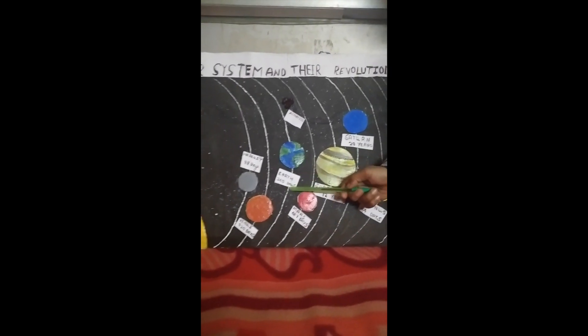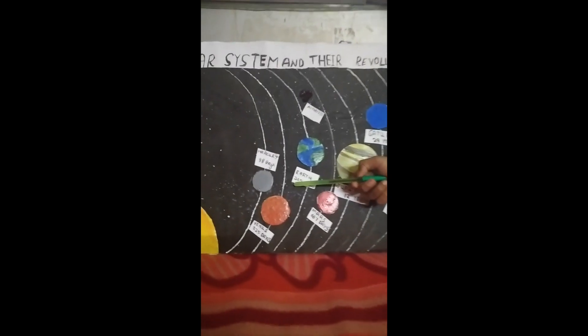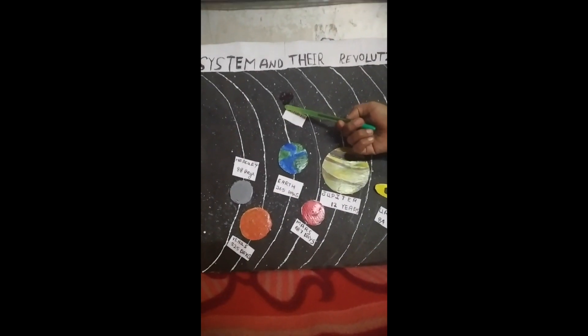The third planet is Earth. The revolution period is 365 days. See this is Astronomical.